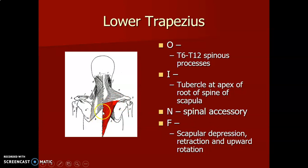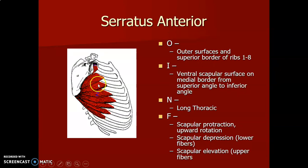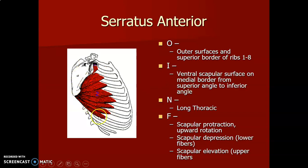Serratus anterior originates from the outer surfaces and superior border of the first to eighth ribs and inserts on the ventral surface of the medial border of the scapula. It is innervated by the long thoracic nerve. It causes scapular protraction and upward rotation. The lower fibers cause scapular depression and the upper fibers cause scapular elevation.